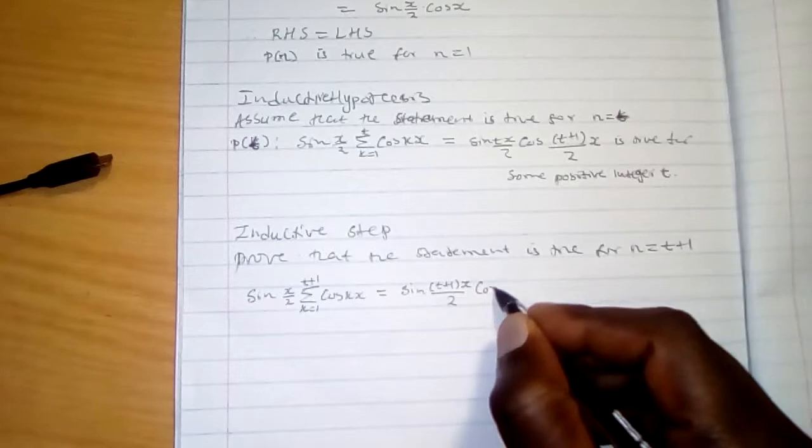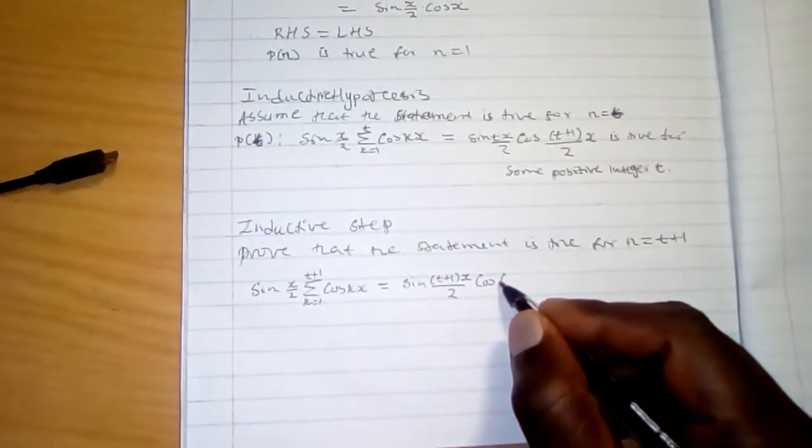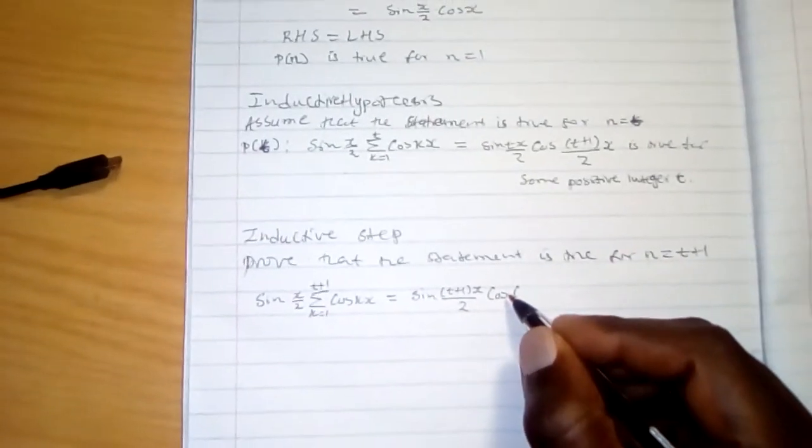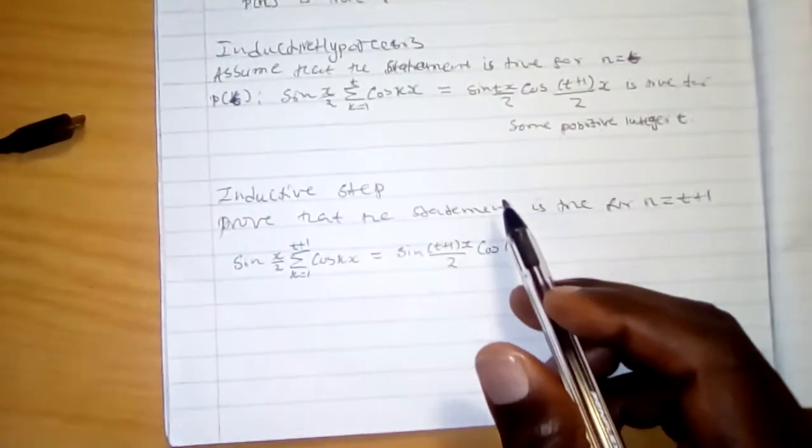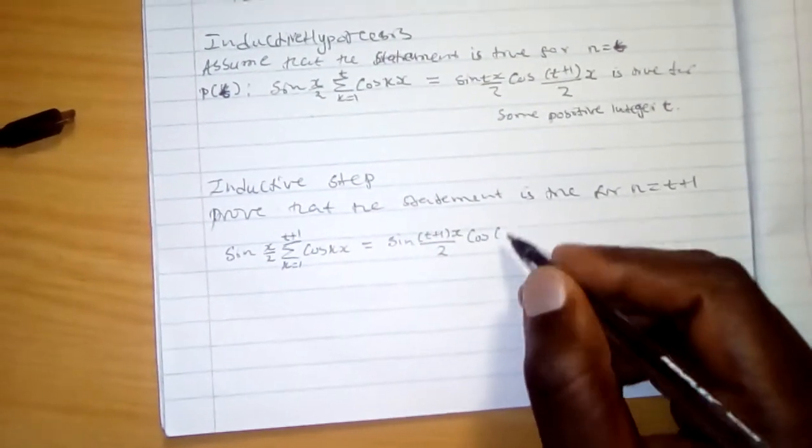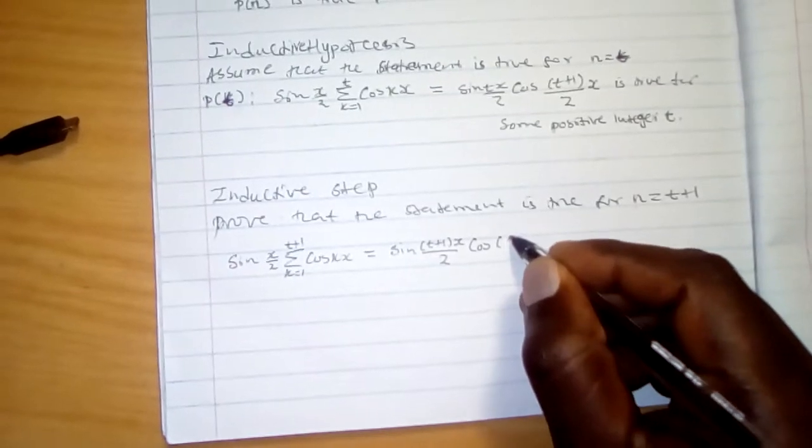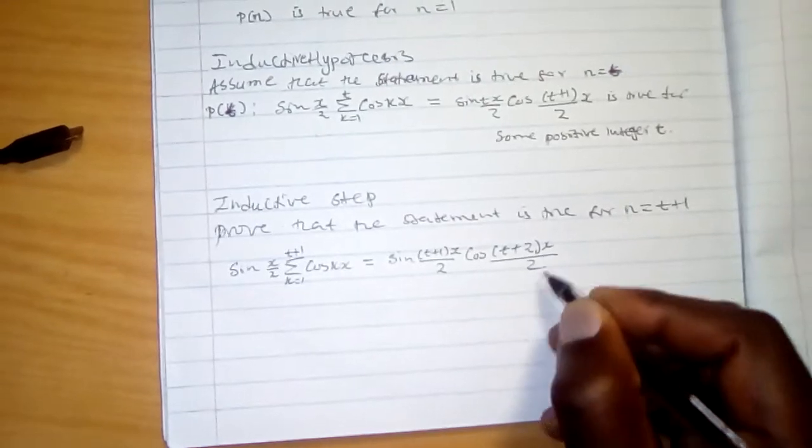Terms cos t plus 1, then this is going to be cos t plus 1 plus 1, which is 2x over 2.